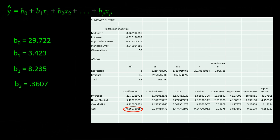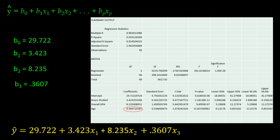Now that we have all the coefficients for the slopes and the y-intercept, we can get our line of regression: y-hat equals 29.722 plus 3.423 times x1, plus 8.235 times x2, plus 0.3607 times x3.